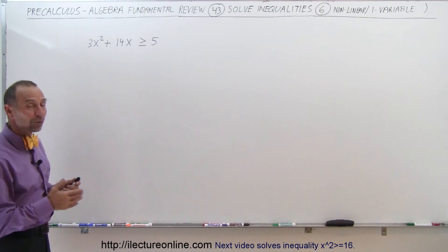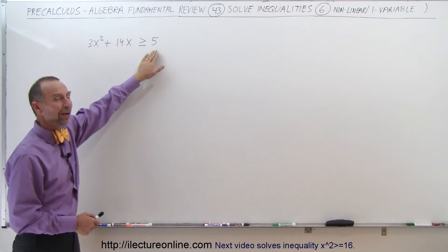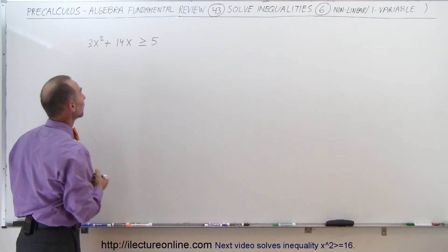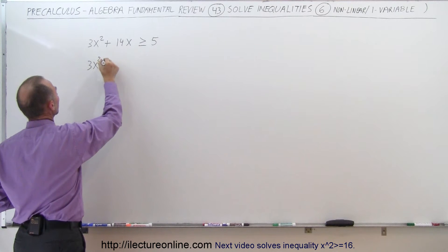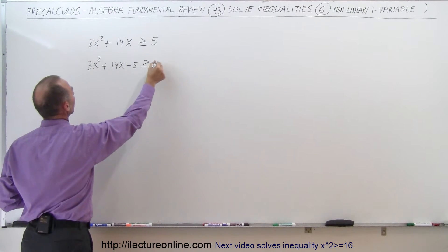Notice we now have terms on either side of the inequality sign, and it's a second-order polynomial on the left side. So what we should probably do is move everything over to one side and have a zero on the right side. We don't set it equal to zero because we have that inequality symbol there. Let's move the 5 across. That will give us 3x squared plus 14x minus 5 greater than or equal to zero.